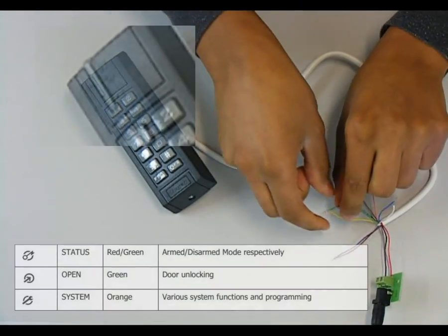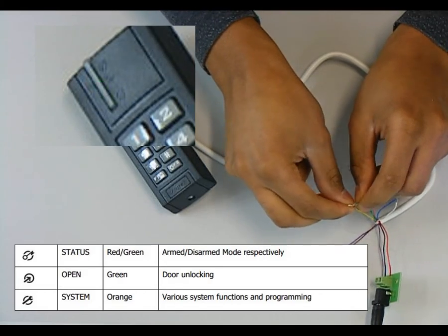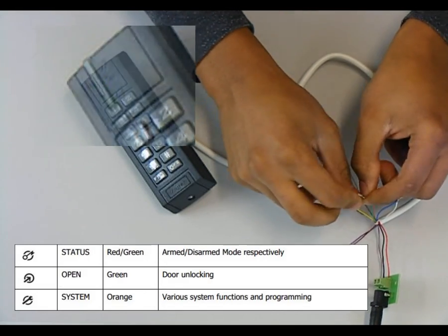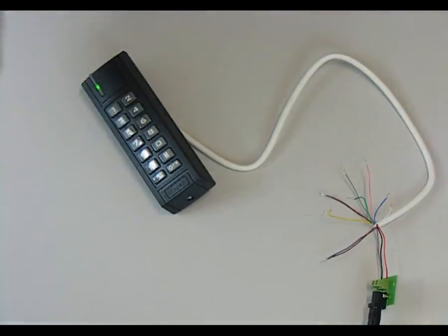While green LED open is flashing, remove bridge between CLK and IN1 lines, then LED system will start flashing.